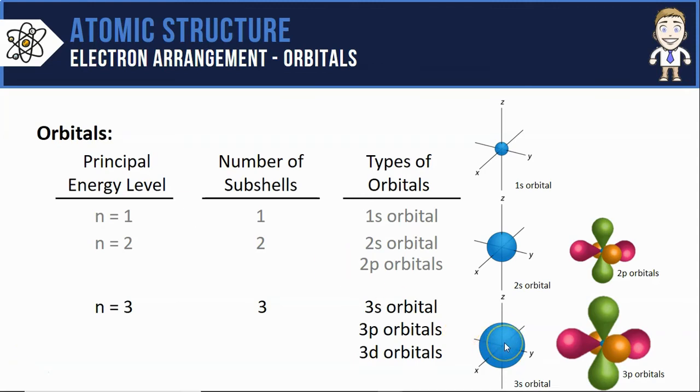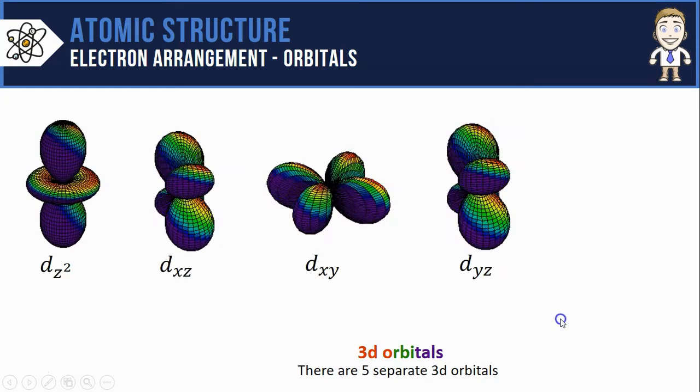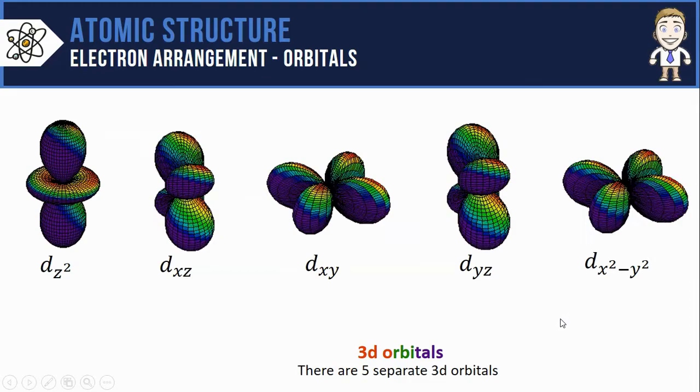So there's only one s orbital in each energy level. Three separate p orbitals following that pattern of odd numbers explains that there's five separate d orbitals. They're increasingly complex in shape and name. Here's what each one looks like.